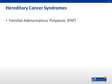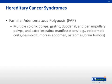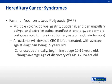Familial adenomatous polyposis leads to the invariable presence of multiple colonic polyps, the frequent occurrence of gastric, duodenal, and periampullary polyps, and the occasional association of extraintestinal manifestations, including epidermoid cysts, desmoid tumors in the abdomen, osteomas, and brain tumors. All patients with a defective gene will develop cancer of the colon if left untreated, with the average age of a patient who is newly discovered to have colon cancer related to FAP being 39 years old. Patients should receive annual colonoscopies beginning at 10 to 12 years old, though the average age of discovery of FAP is 29 years old.